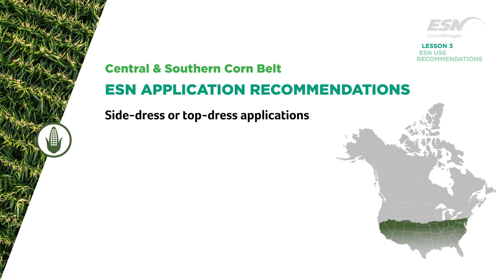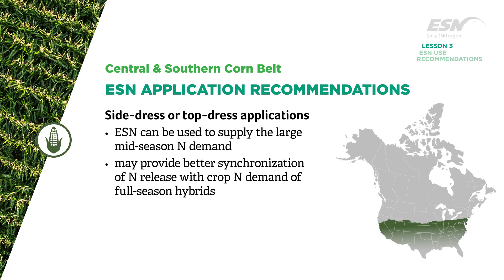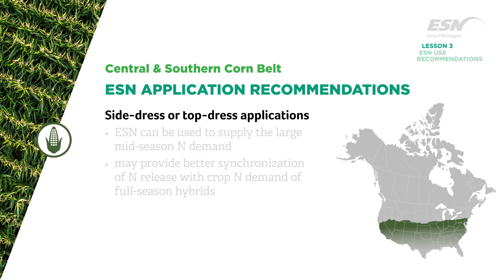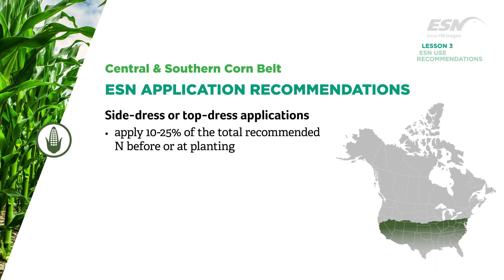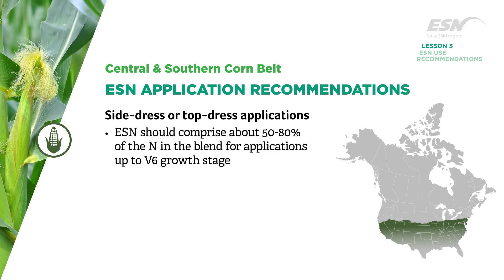Side dress or top dress applications of ESN can be used to supply the large mid-season N demand of corn in southern geographies and may provide better synchronization of N release with crop N demand of full-season hybrids. Apply 10 to 25 percent of the total recommended N before or at planting, then top or side dress the remaining nitrogen as a blend of ESN and soluble N fertilizer such as urea or ammonium sulfate.